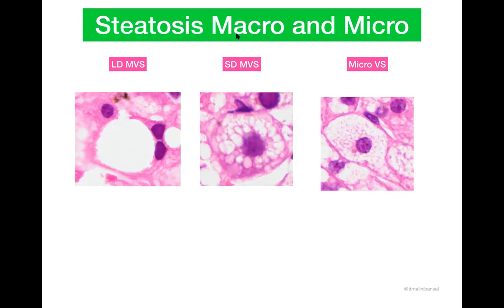There are two major kinds of fat vacuoles which are seen within the hepatocytes, and these fat vacuoles are either macrovesicular or they are known as microvesicular. Macrovesicular means the droplets of fat are going to be large, whereas for microvesicular, these are tiny droplets which are present in the cytoplasm of the liver cells.